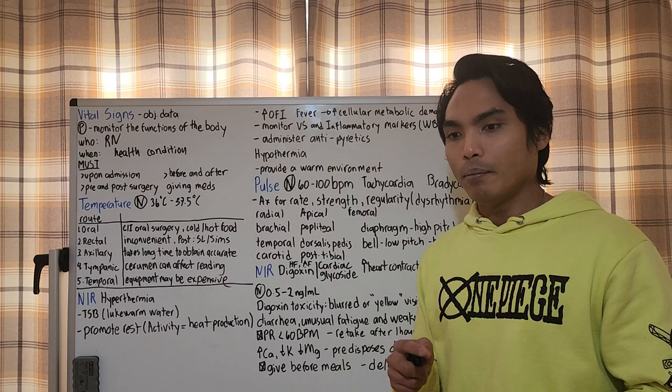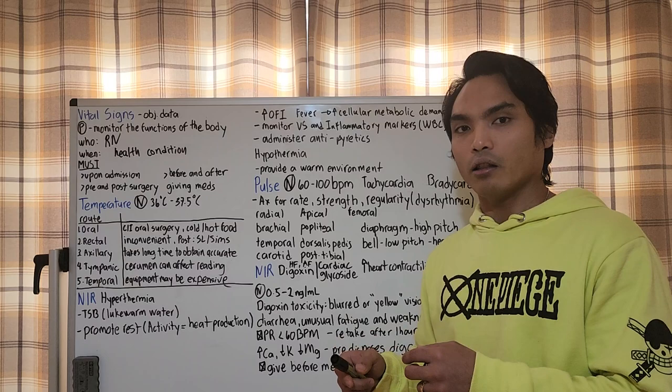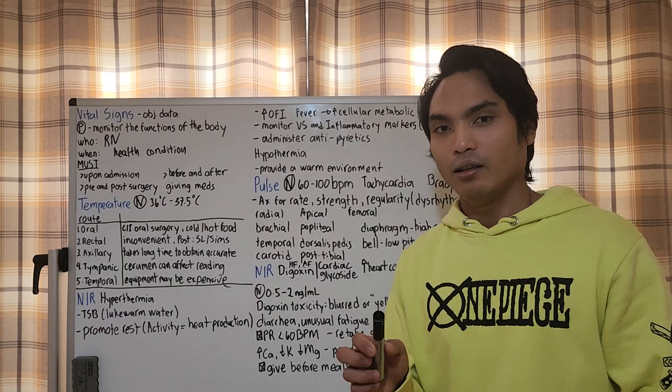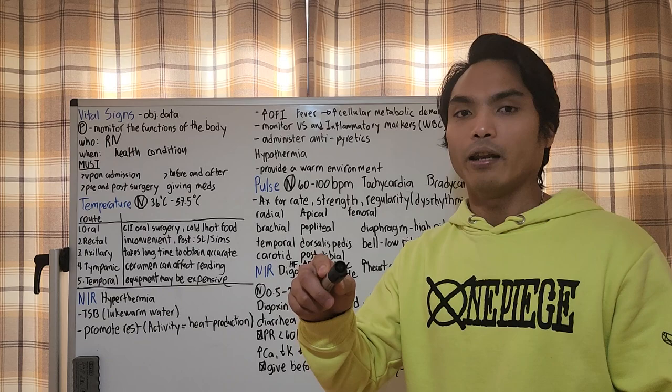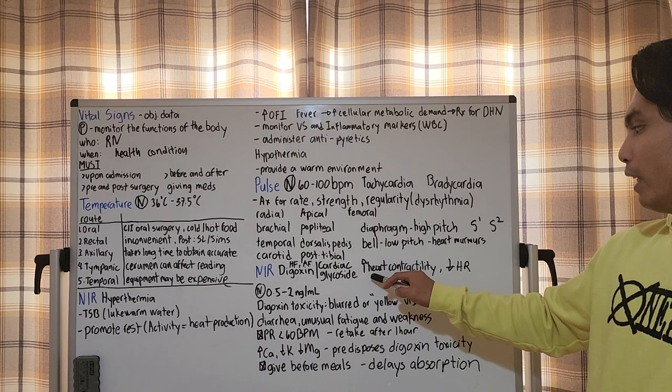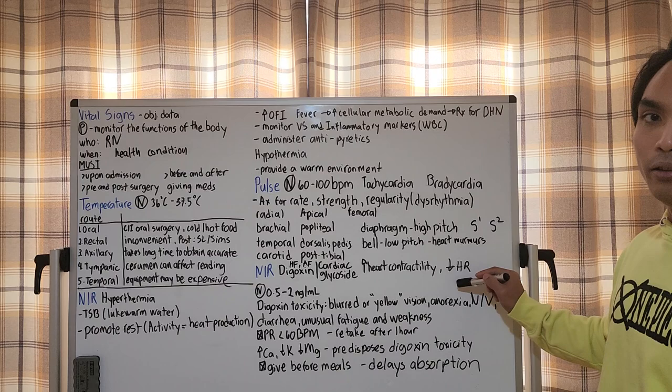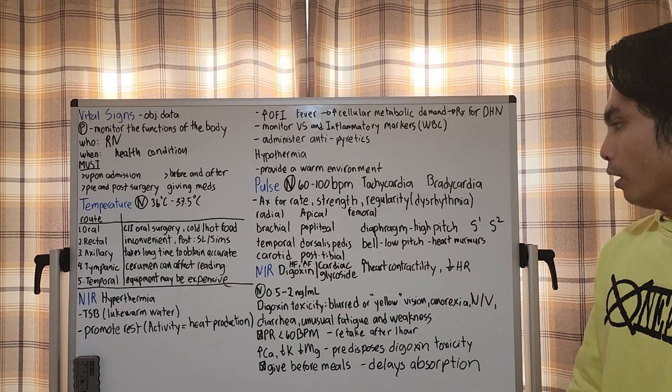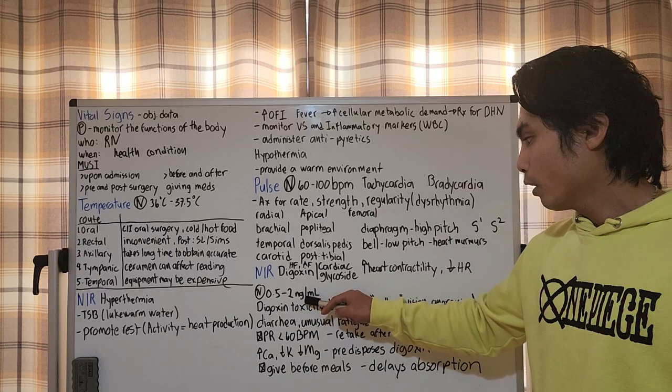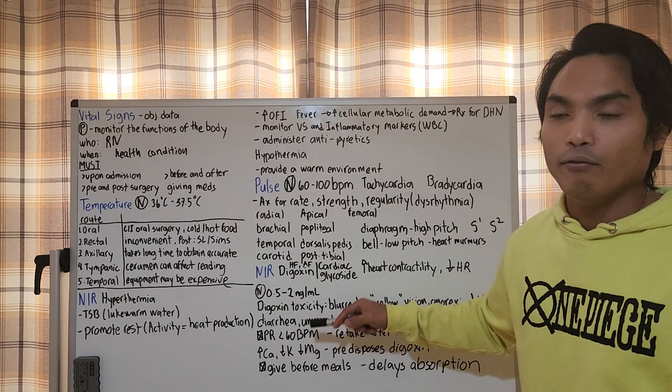What I want to emphasize in the pulse section is the medication digoxin. Digoxin, brand name Lanoxin, is a cardiac glycoside mainly used for clients with AFib, atrial fibrillation, and heart failure. Cardiac glycoside means it will increase heart contractility, increasing the pumping action of the heart, while decreasing heart rate to lower cardiac workload. Normal therapeutic level is 0.5 to 2 nanograms per microliter.